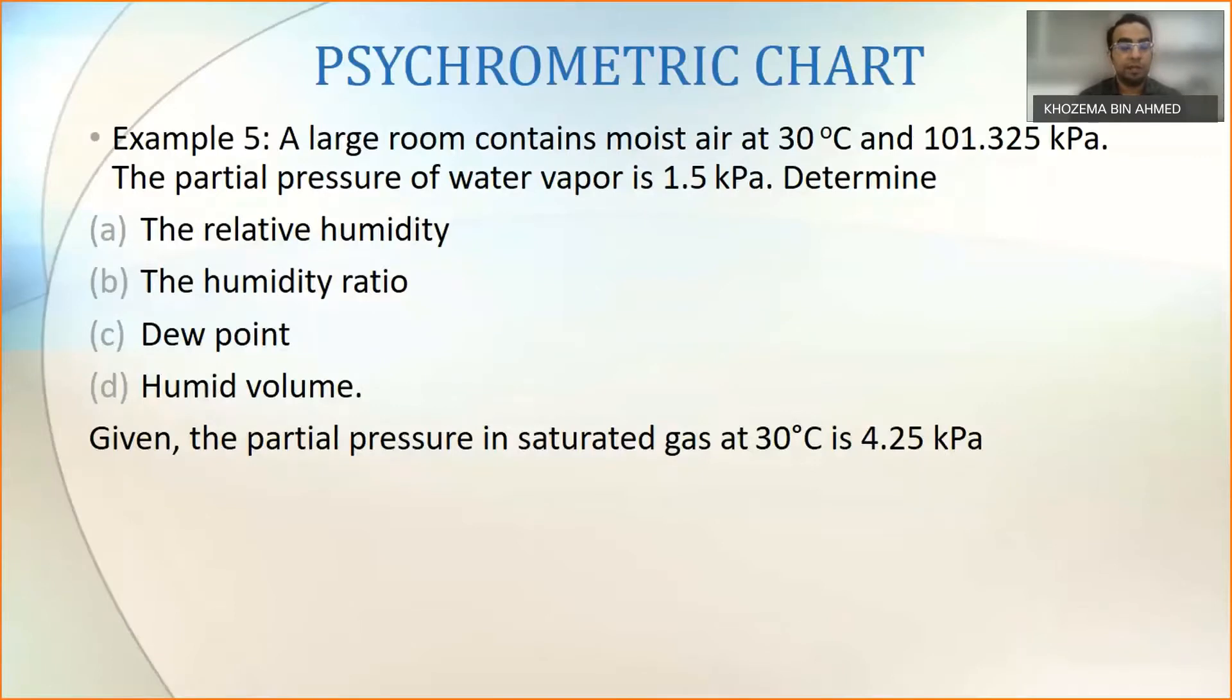Hi everyone, so let us look at another example on how to use psychrometric chart. Example number five says that a large room contains moist air at 30 degrees Celsius and 101.325 kilopascal pressure. Partial pressure of water vapor is at this temperature at 30 degrees Celsius is 1.5.